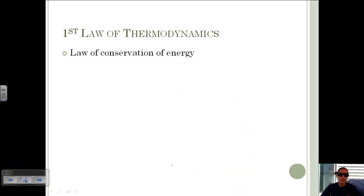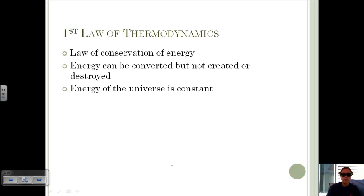This brings us to the first law of thermodynamics, which is the law of conservation of energy. It says energy can be converted but not created or destroyed. We can change the form of the energy, but we can't create or destroy it. Because of this, the energy of the universe is constant. It's just always changing forms. We can change energy through work.